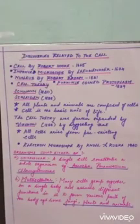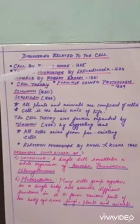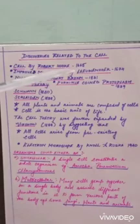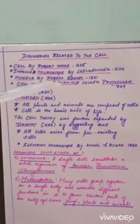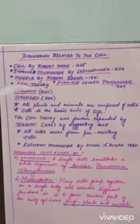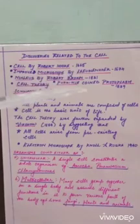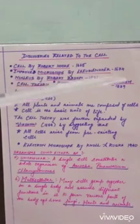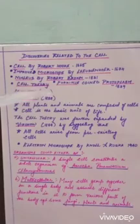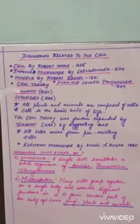Here is a list of some really prominent discoveries related to the cell. The first is the discovery of the cell itself by Robert Hooke. After which we have the discovery of the improved version of the microscope. Then the nucleus by Robert Brown, and Purkinje coining the term protoplasm. Then comes the cell theory, which was proposed by Schwann and Schleiden.